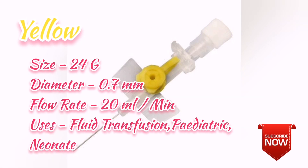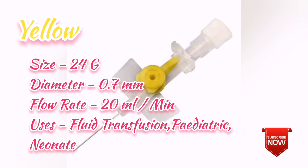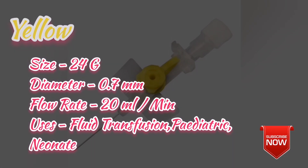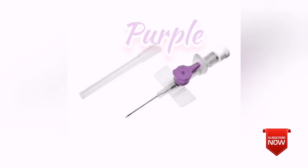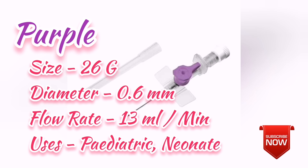The next size is 24G, diameter is 0.7 mm, and flow rate is 20 ml per minute. This is purely pediatric. You can also use this for neonates. If you want to use any color, it will be yellow. The purple color has a size of 26G, diameter is 0.6 mm, and flow rate is 13 ml per minute. This is purely for neonatal purpose.